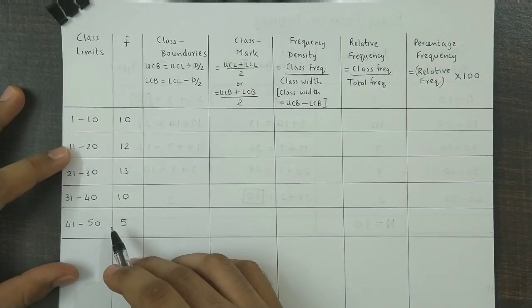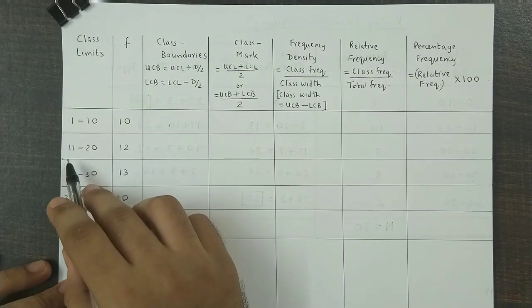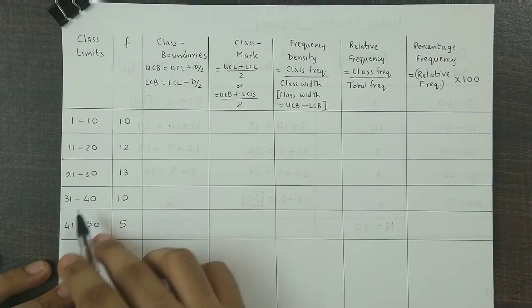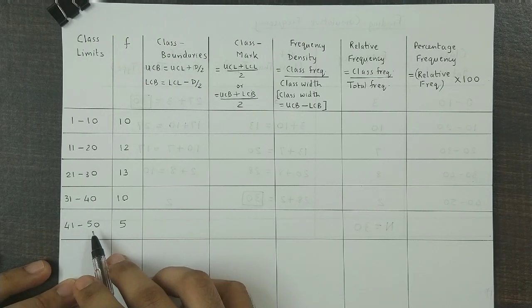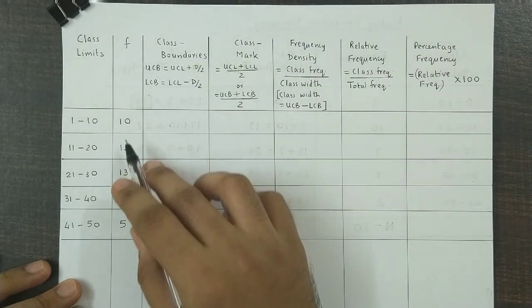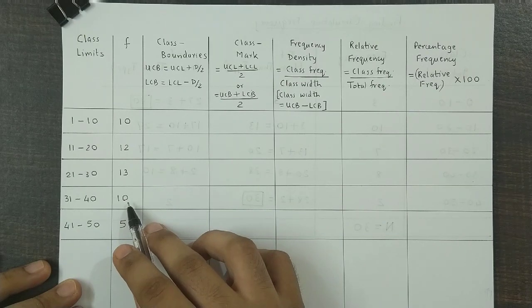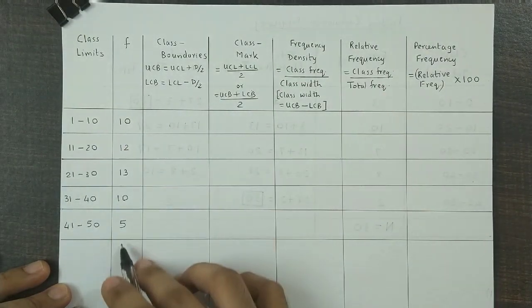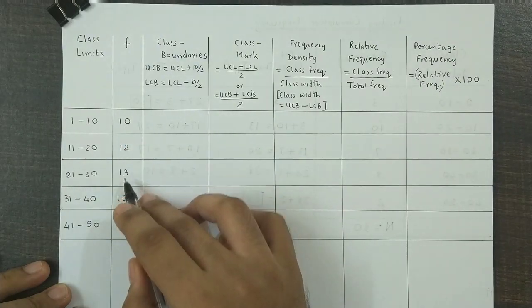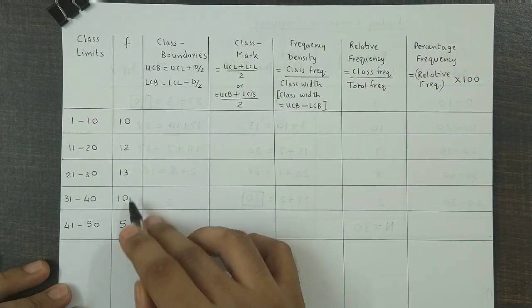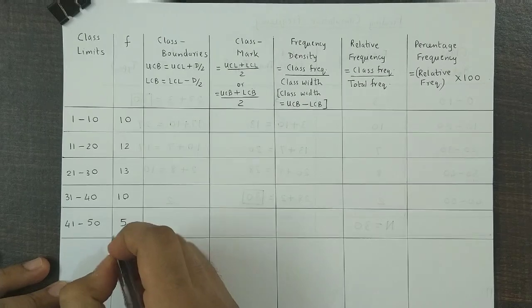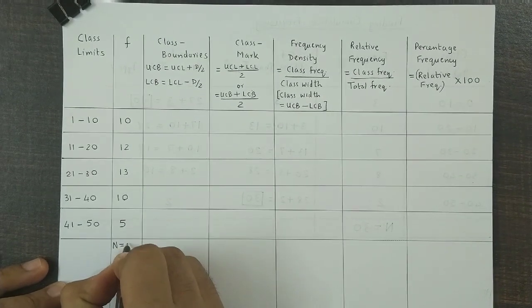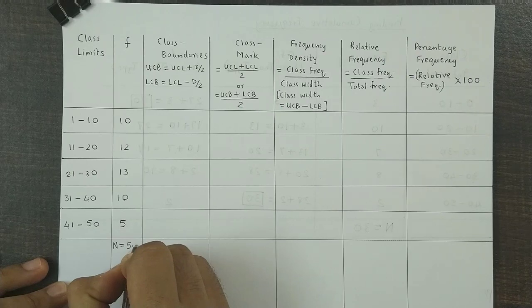We have been given the class limits 1 to 10, 11 to 20, 21 to 30, 31 to 40, 41 to 50, and the frequencies are 10, 12, 13, 10, and 5. If we add up all the frequencies, the total frequency n is equal to 50.